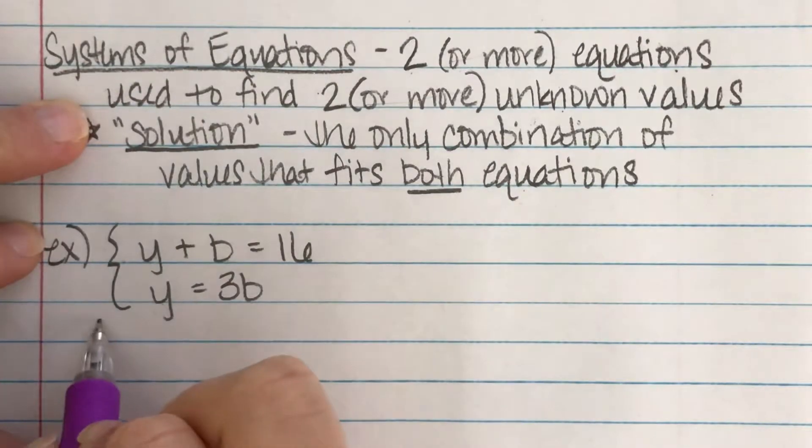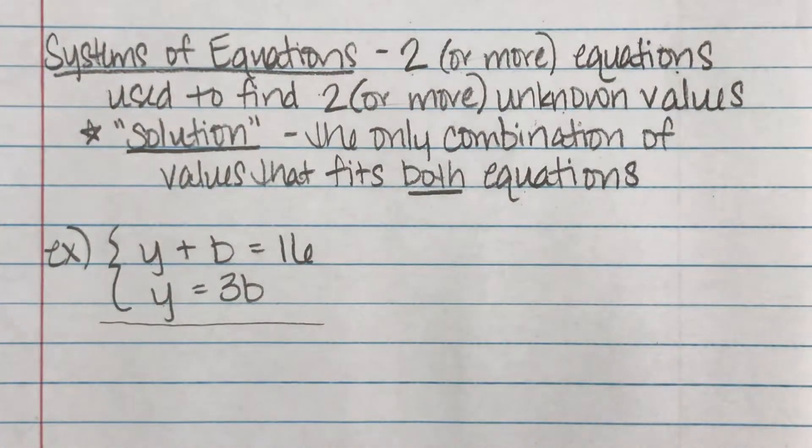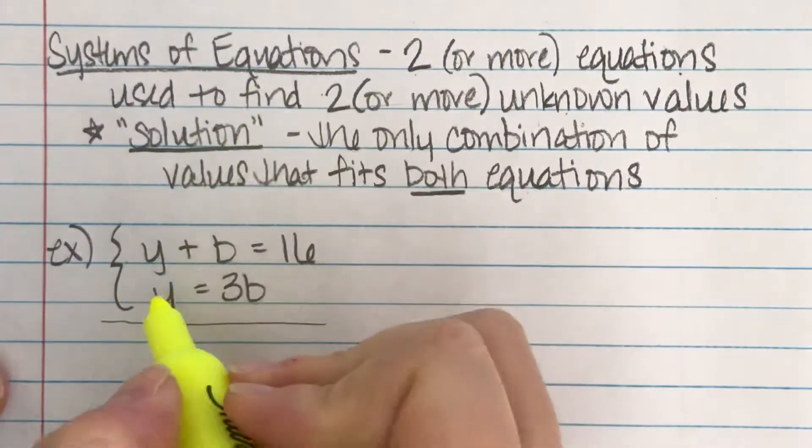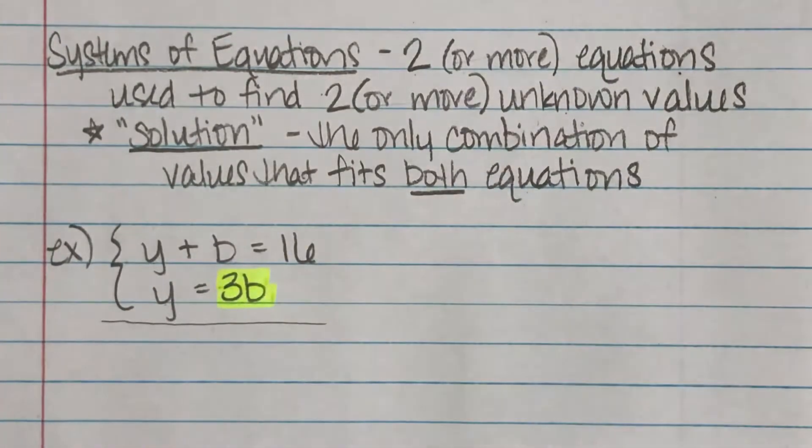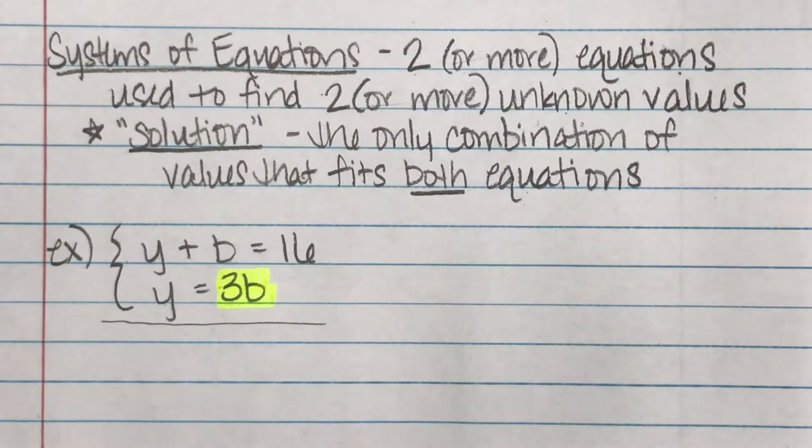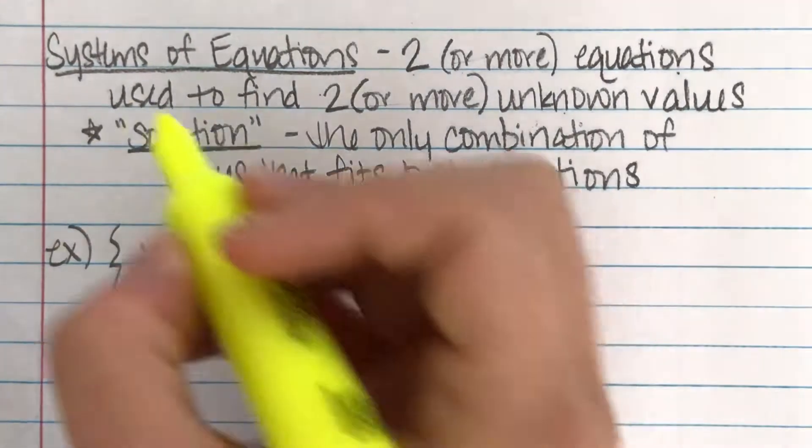The yellow has to be triple the blue and when you add them together, you end up with 16. Here's how we use this information algebraically rather than guessing and checking and trying to find a combination that works. We know that the yellow candies equals three times the blue candy. That is the formula to find the yellow number of candies. If I know that that's kind of like now a replacement for yellow, right?